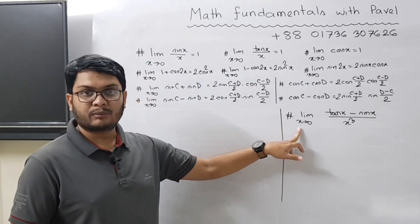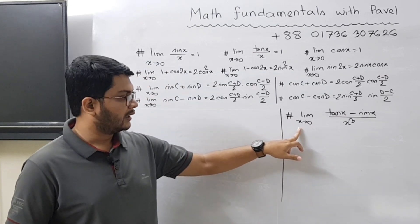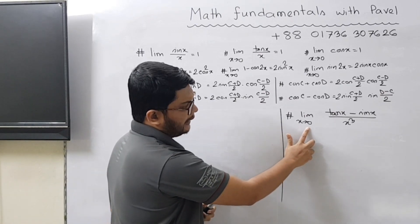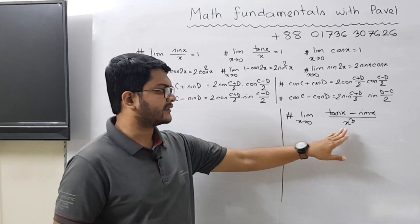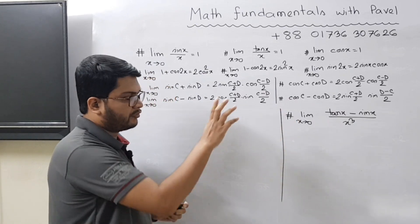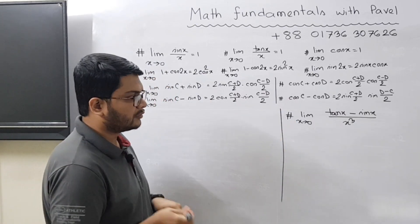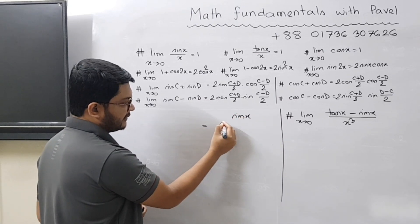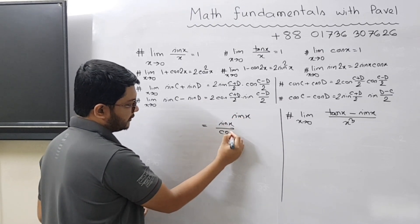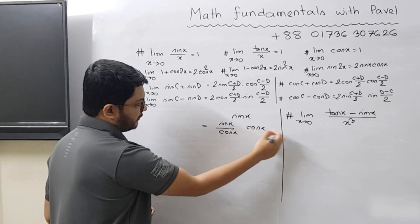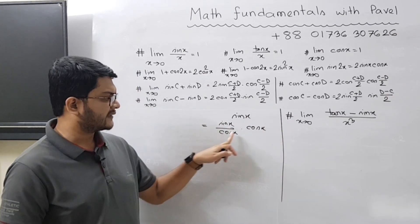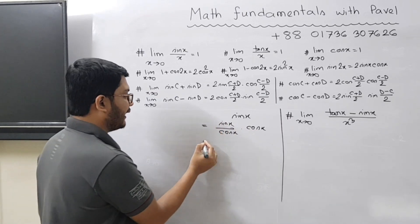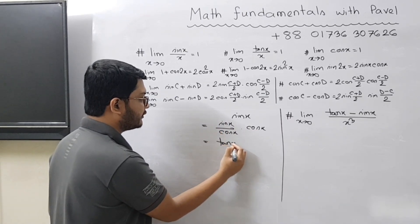As you can see, the problem statement is already written on the board: limit x tends to 0, tan x minus sin x divided by x³. Before going to the next line, we can write sin x as sin x divided by cos x multiplied by cos x. So cos x and this cos x cancel out and we get sin x. Then in the next line we get tan x times cos x, because we know that sin x divided by cos x equals tan x. So we can apply this concept here.